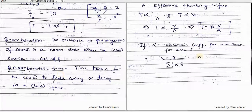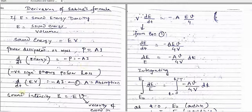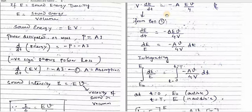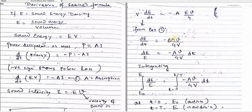Differentiating, with V constant, V times dE/dt equals minus A times E times V divided by 4. Replacing I as E times V divided by 4, and simplifying from the equation, we get dE/E equals minus A times V divided by 4V times dt. So dE/E equals minus AV divided by 4V times dt.